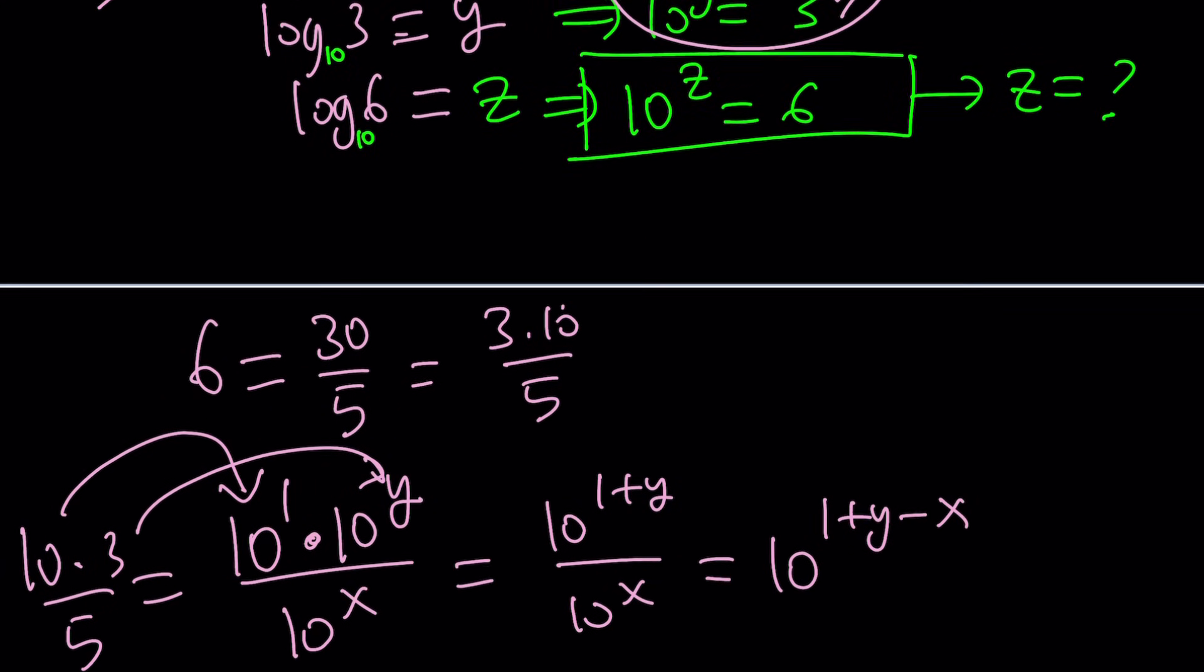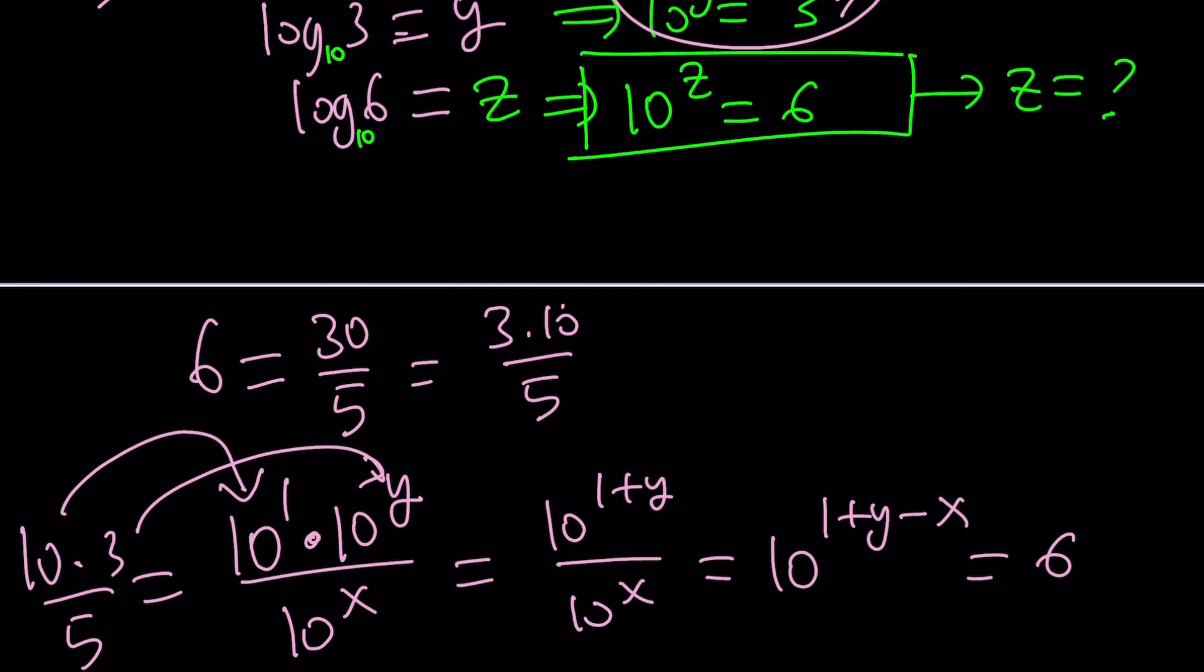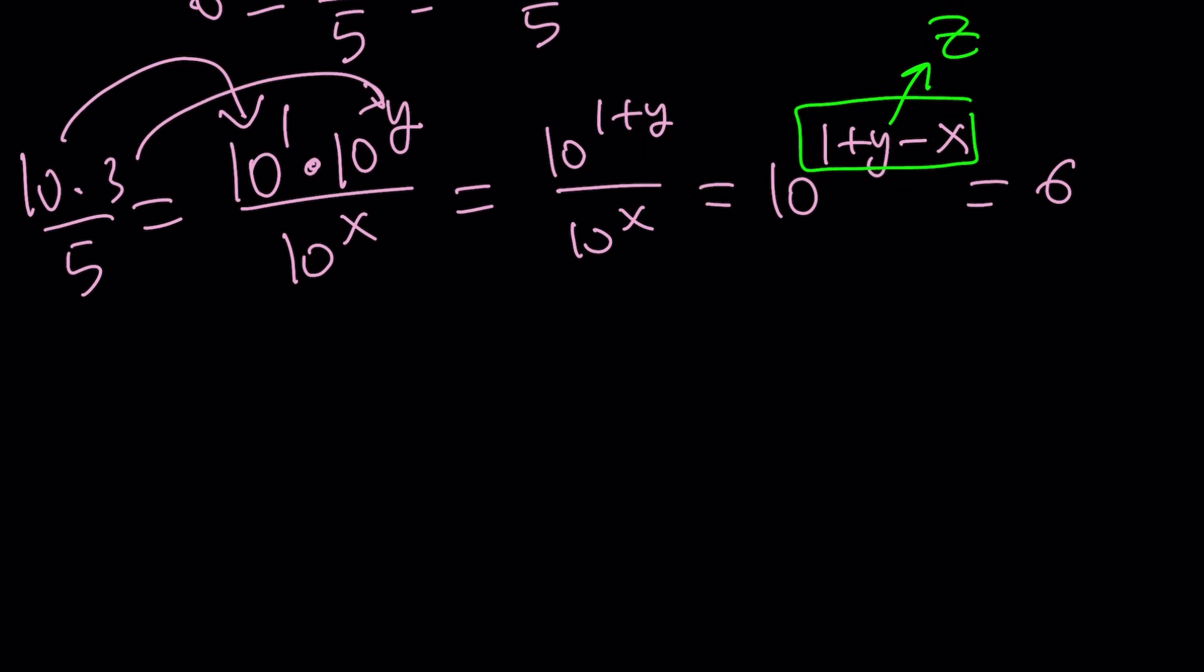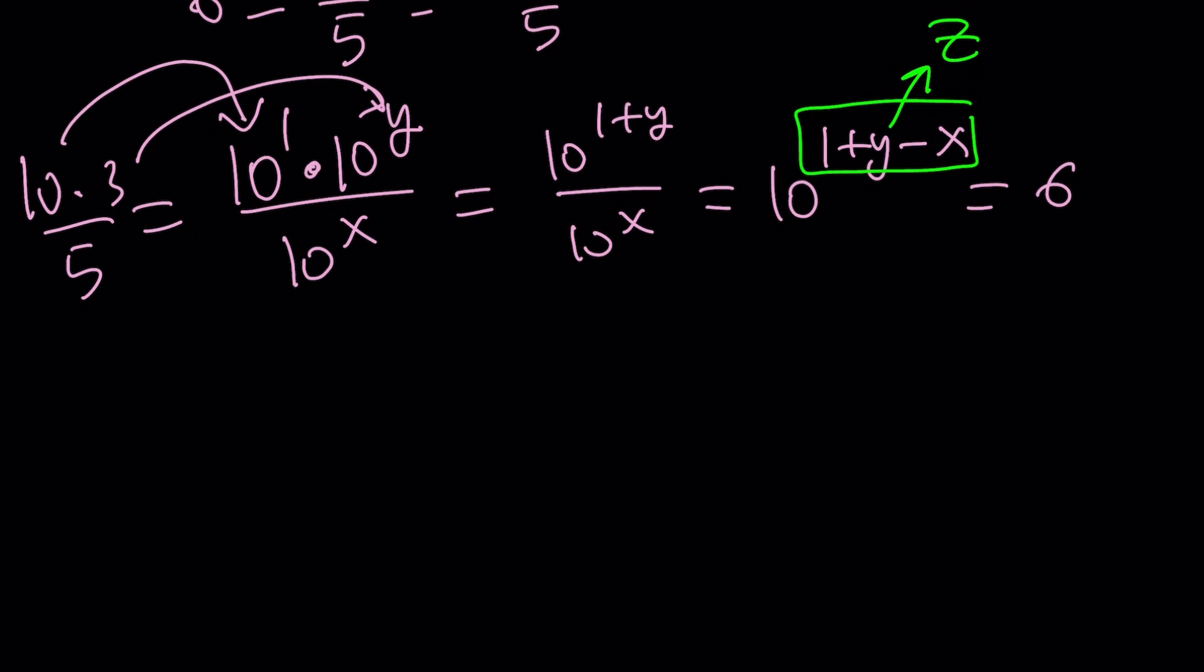Wait a minute. 10 to the power of z is equal to 6, but this is equal to 6. So this is z, and I was looking for z. I hope you see what I see. So z, which is what I'm looking for, is 1 plus y minus x.